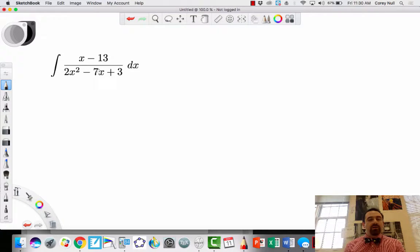By parts won't work, u substitution won't work, so we have to try something else. And what we're going to try is something that re-expresses this fraction, this rational expression, as a sum of two more simple rational expressions. Let me show you what I mean.